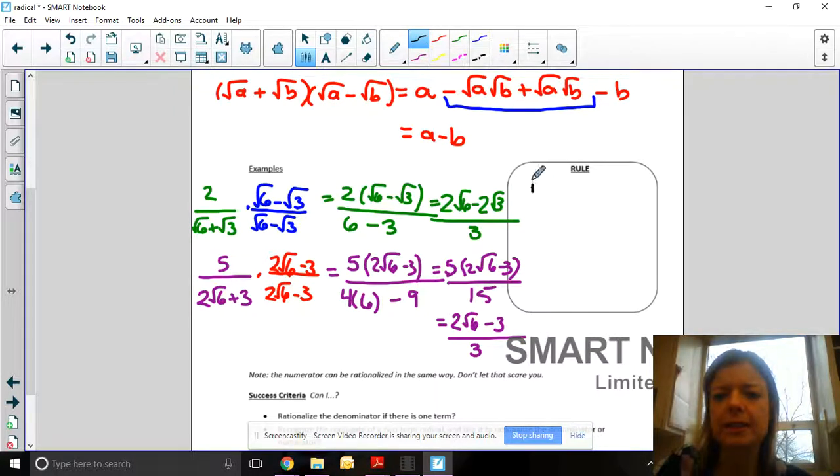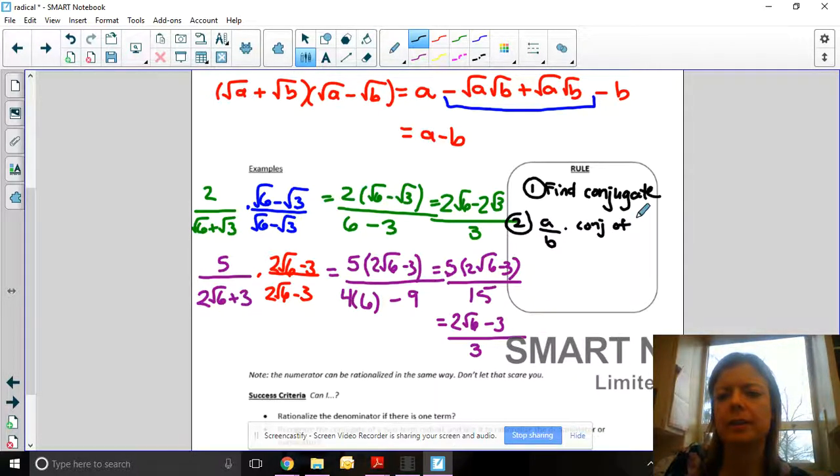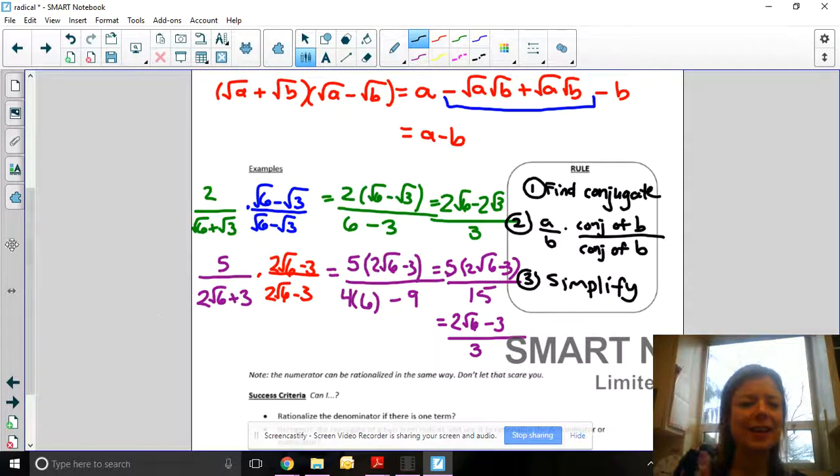Your rule here is step 1, find the conjugate. Step 2, take your A over B times conjugate of B divided by conjugate of B. And step 3, simplify using your algebra knowledge.